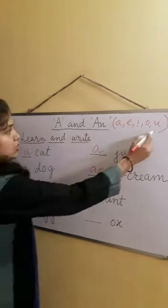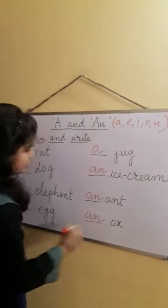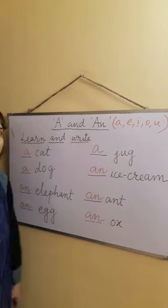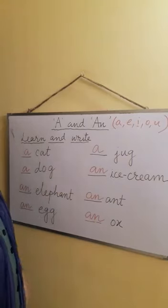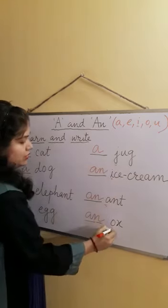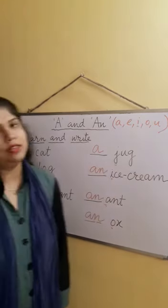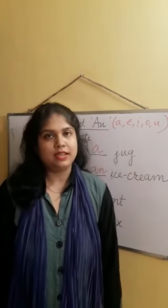Ox. O is also a vowel, so we will write an ox. In this way you can write A and An. Just you have to see the first alphabet - if it is a vowel or not. If it is a vowel, then you will write An. And if it is not a vowel, you will write A.